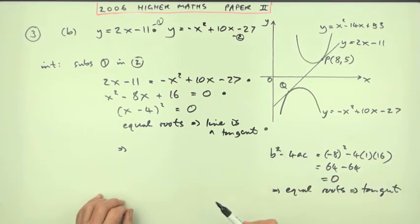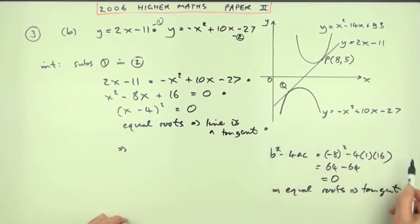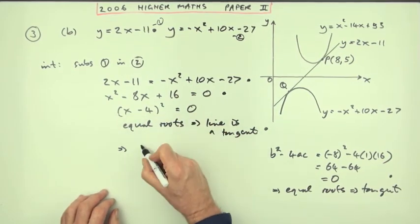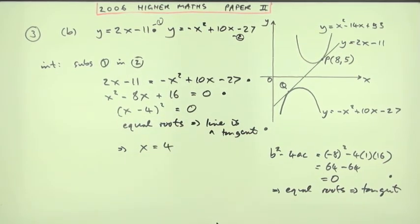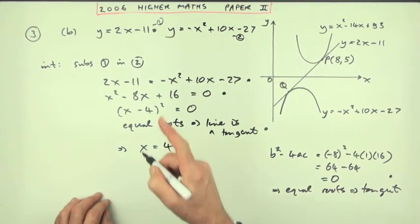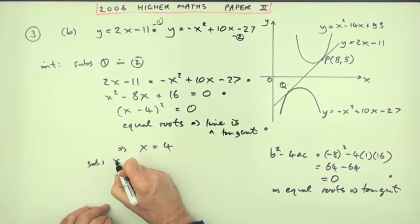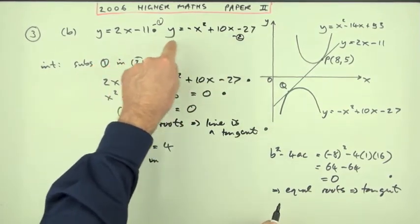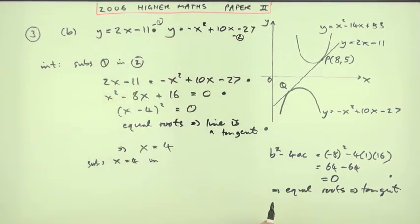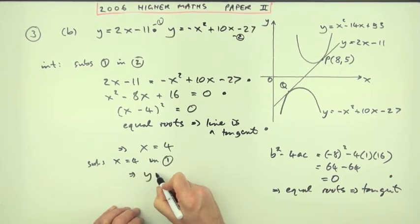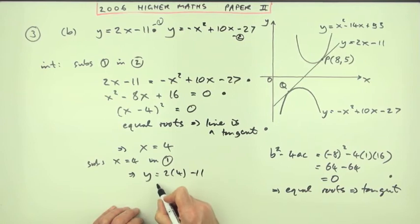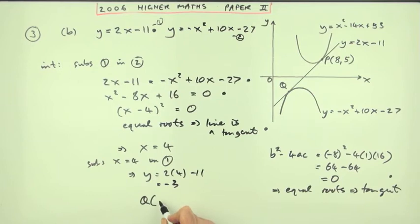But if you have to go on and find the point, it's much quicker to just factorise directly. From x minus 4 squared equals zero, x equals 4 is the only answer. Substituting x equals 4 back into equation one: y equals 2 times 4 minus 11, which is 8 minus 11, which is negative 3. So Q is the point (4, -3). That's the fifth mark.